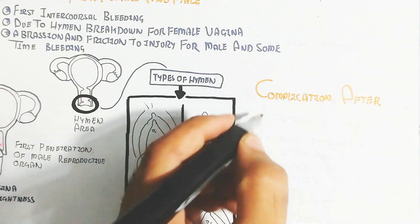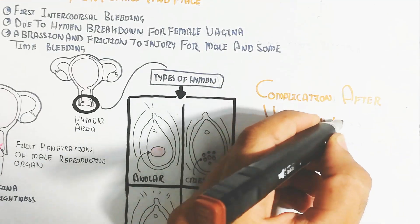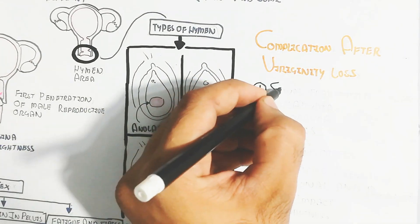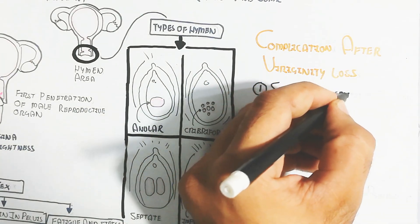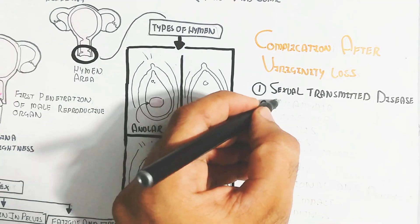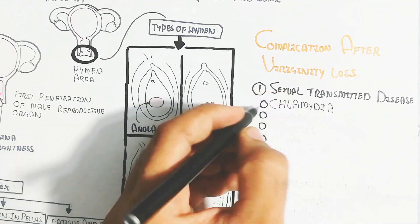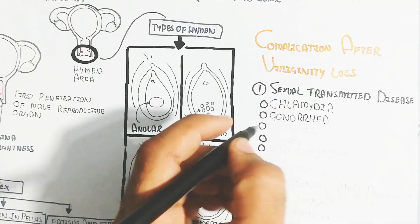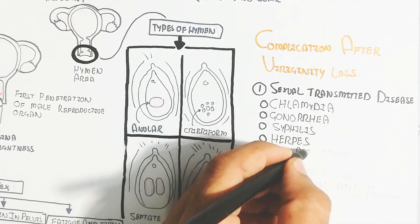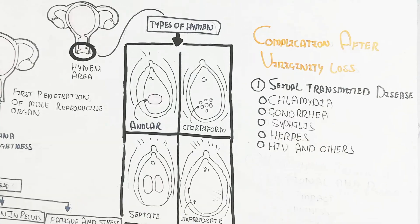We will focus on complications after virginity loss. Sexual transmitted diseases can be chlamydia, gonorrhea, syphilis, and herpes, as well as HIV and other STDs. STD means sexually transmitted disease.